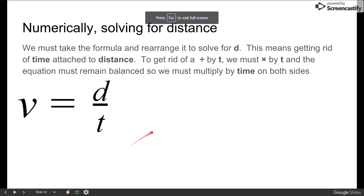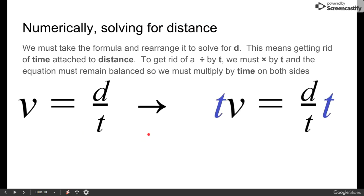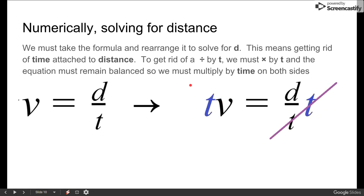We left off here looking at calculating distance if you're given speed and time. To do this we have to rearrange a formula. The only way to get rid of a divide by time is to multiply by time, but it's an equation so what we do to the left we must do to the right or it will cease to balance, and this allows a cancellation.